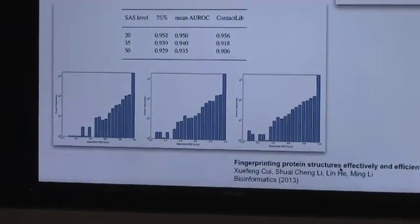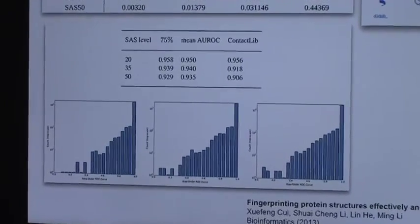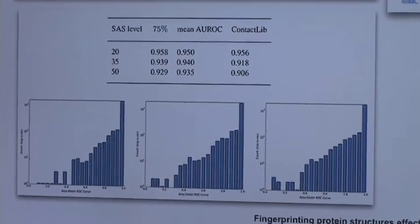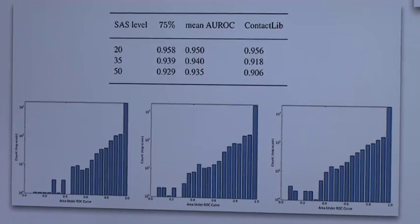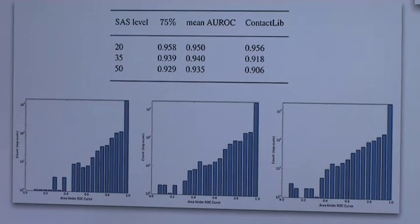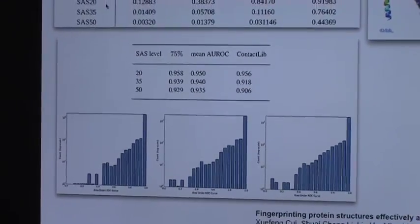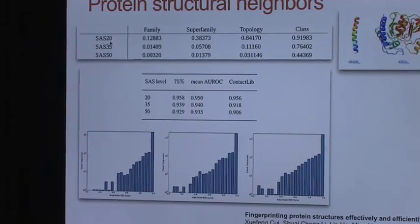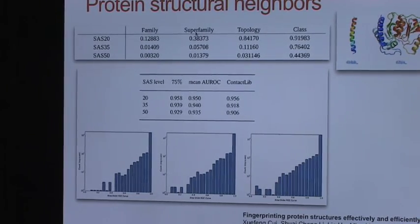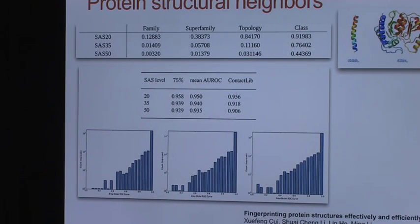So state of the art for this problem is Contact Map Overlap. They measure the capacity to identify structural neighbors by sorting by some criteria of similarity. And they see how well ranked are the pairs of proteins that belong to the same class. For this problem, a real structural neighbor is, two proteins are real neighbors if they are under this criteria of structural superposition and also are inside the same superfamily. You need to meet both criteria to say that two structures are really neighbors.